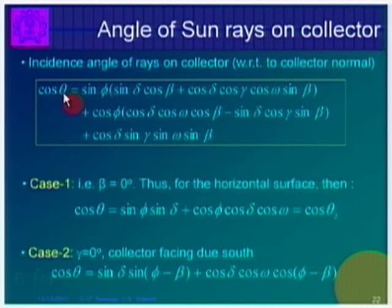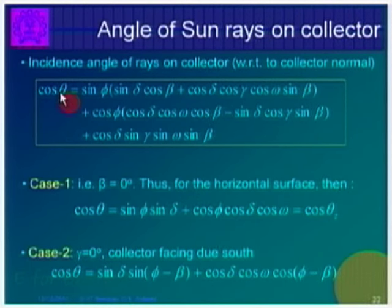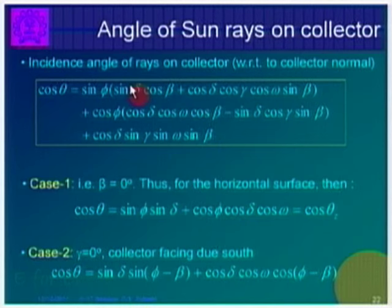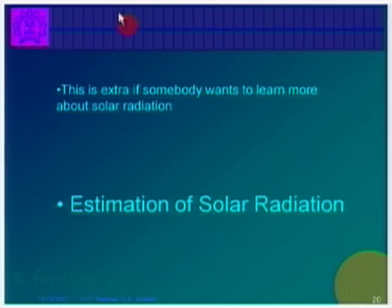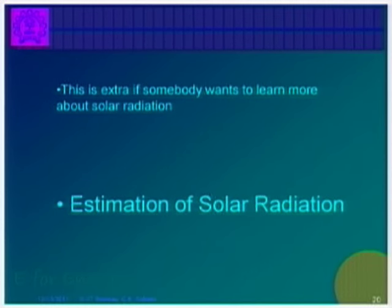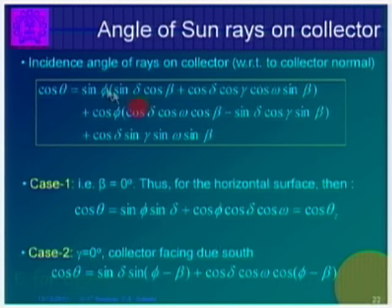When you are doing sun tracking, you can feed this formula into your microcontroller. The microcontroller will calculate all these angles and exactly align your panel perpendicular to the sun rays all the time — morning to evening, all seasons (summer and winter), all locations (equator, northern or southern sides). These extra slides are for those who want to learn more about radiation. After this course, you can go through the solar radiation equations and use them to estimate the amount of solar radiation available at a given location.